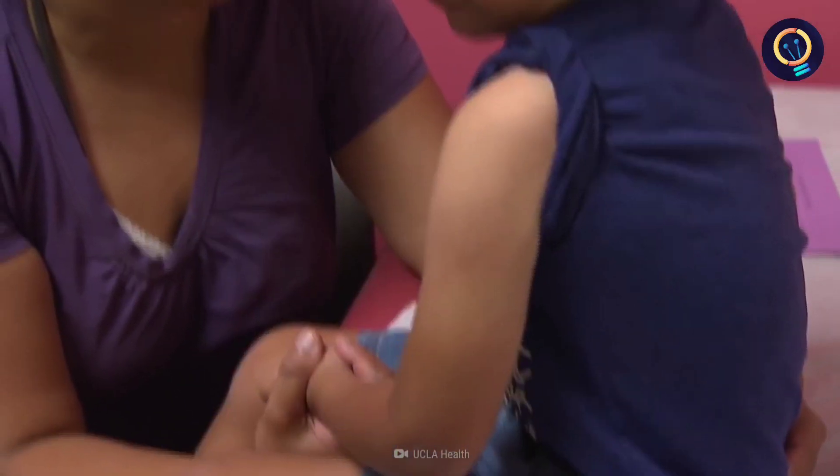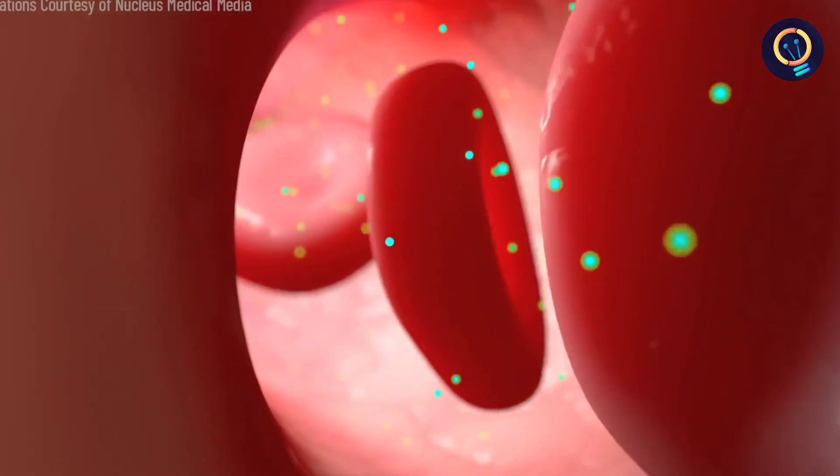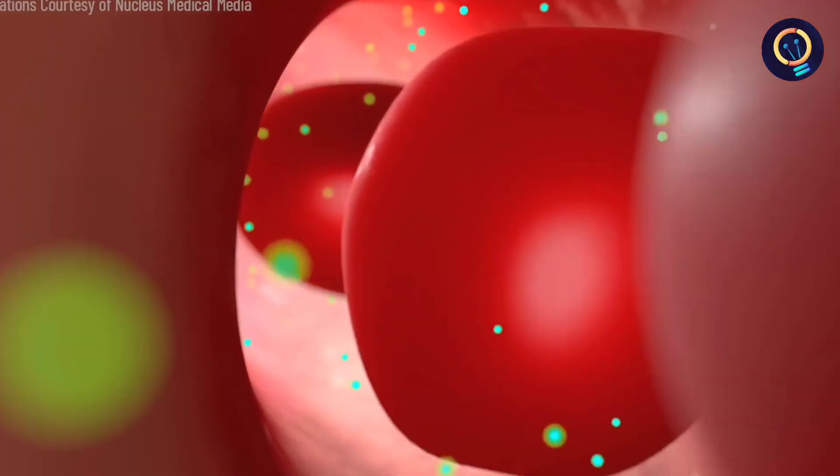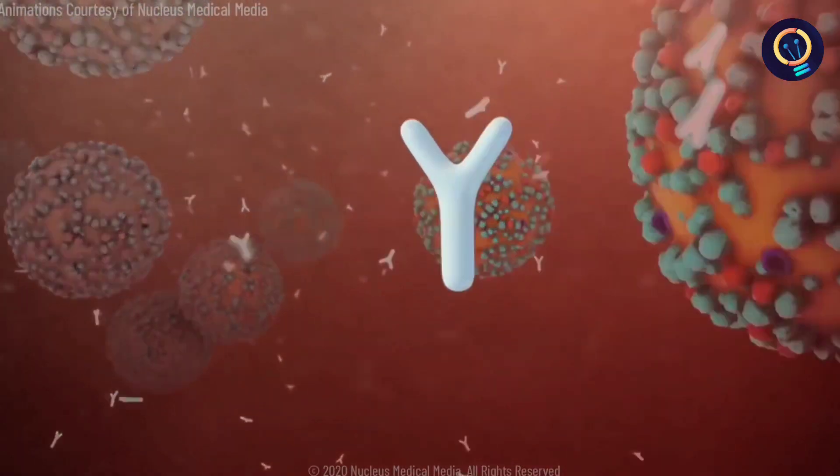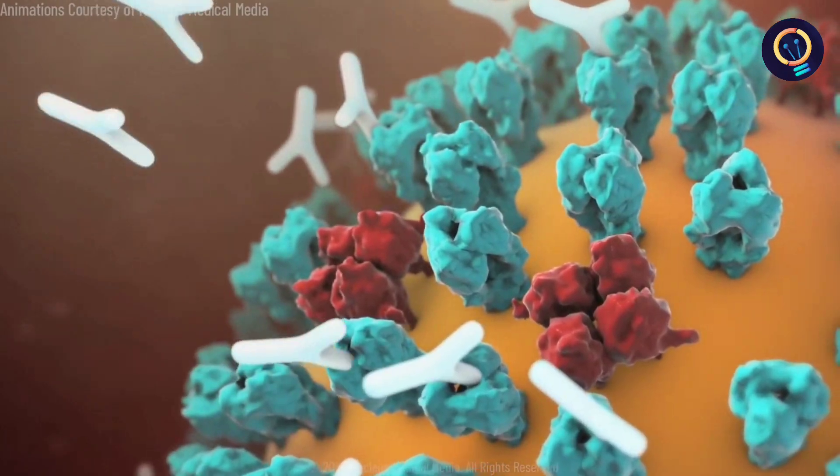Most vaccines work by injecting weakened viruses into your bloodstream which wouldn't harm your body. As soon as the vaccine enters your body the antibodies react as if it is the real virus and triggers the memory cells.